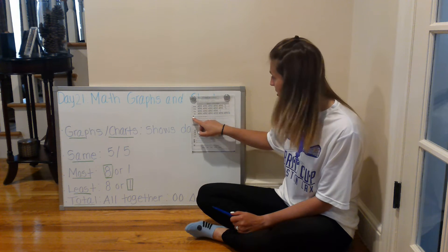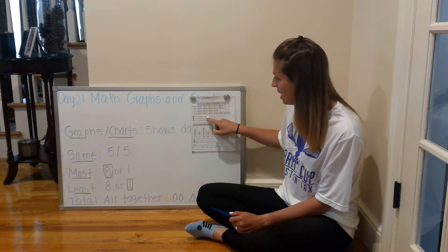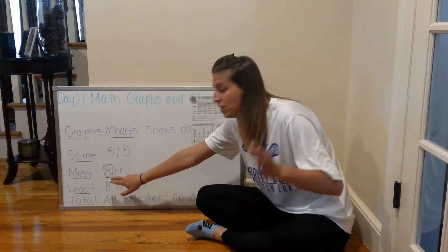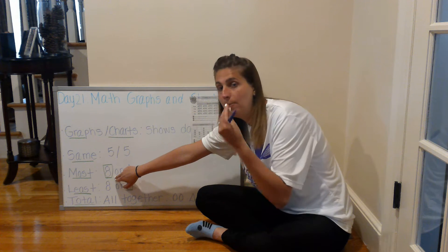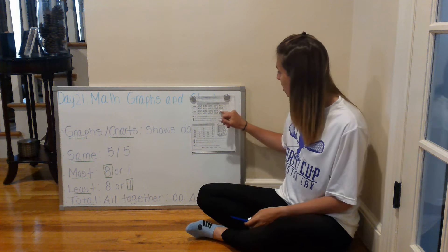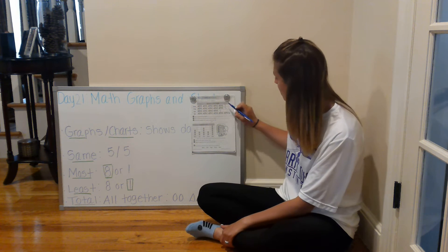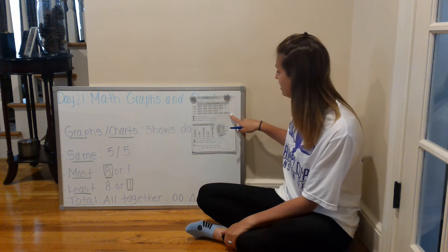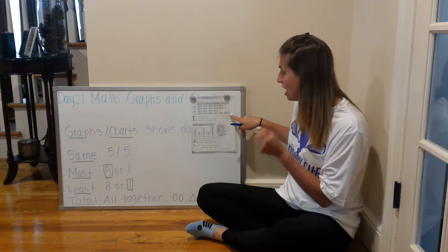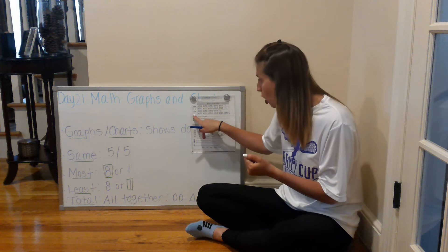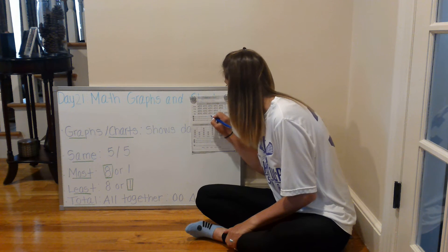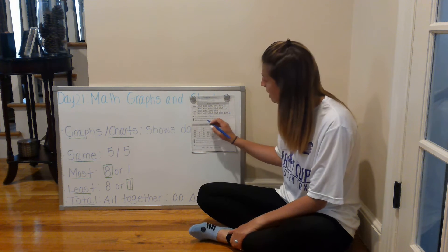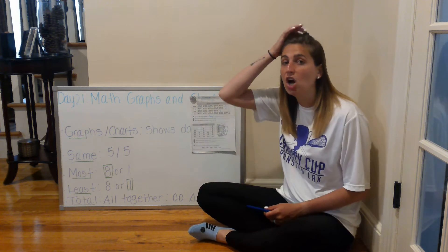Now let's answer the first question: who caught the most fish? We're going to look at all our numbers and find the biggest number. Eight is the biggest compared to one — eight means most. Out of five, five, four, and six, six is the most. The person who caught the most amount of fish is Tony. I'm going to write Tony — T-O-N-Y — on the line, showing that Tony caught the most amount of fish with six fish.